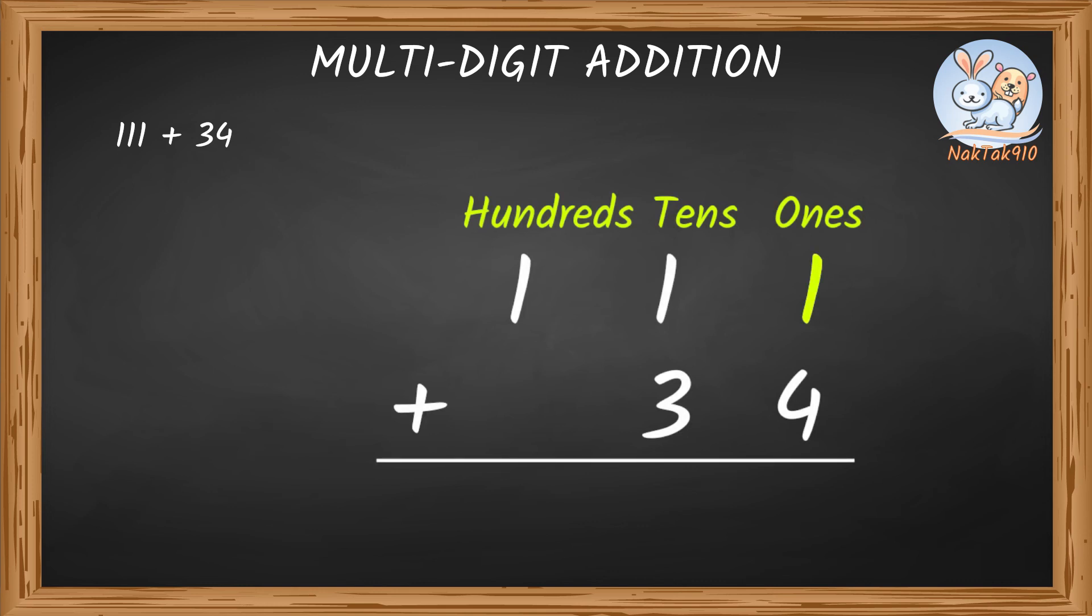One in ones place, one in tens place, and one in hundreds place. Four is in ones place, three is in tens place, and... Oh no! There's no hundreds place! You silly little hamster. What does it mean when there's no hundreds place? A zero? There you go. You know that answer. Just be confident.